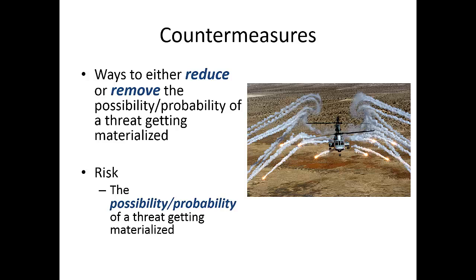Risk means the probability or possibility of a compromise. Another aspect of risk is associated with the term asset: when a threat gets materialized, it will have an impact on an asset, and the amount of damage done to that asset can also be interpreted as risk. So when you talk about risk, there are two things to consider: the probability or possibility of a compromise, and the amount of damage actually done to an asset.